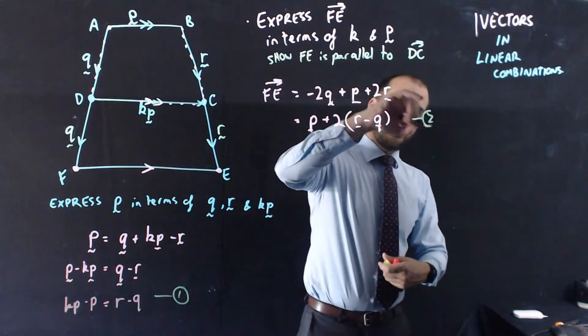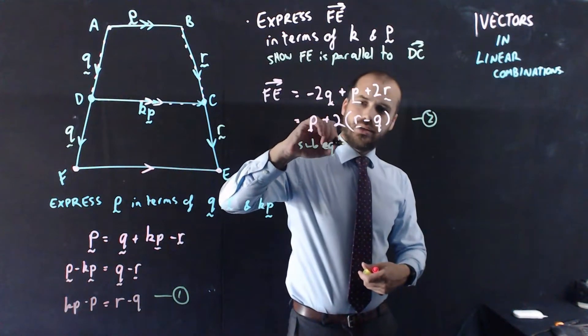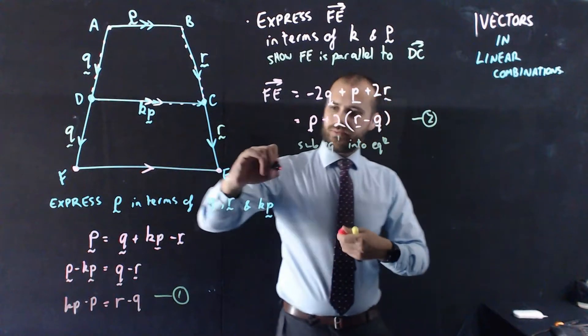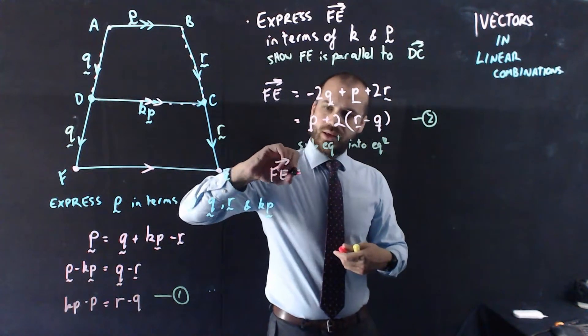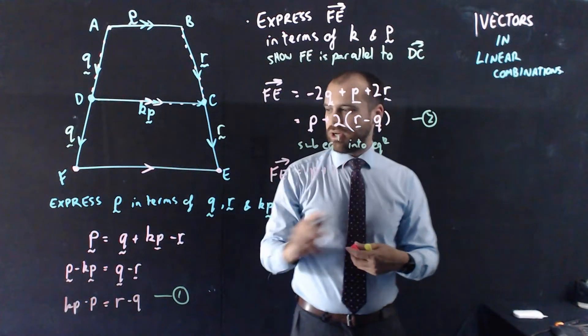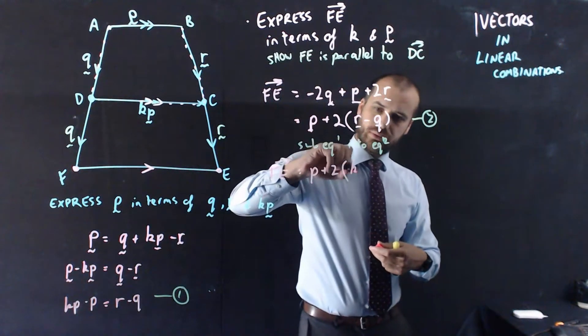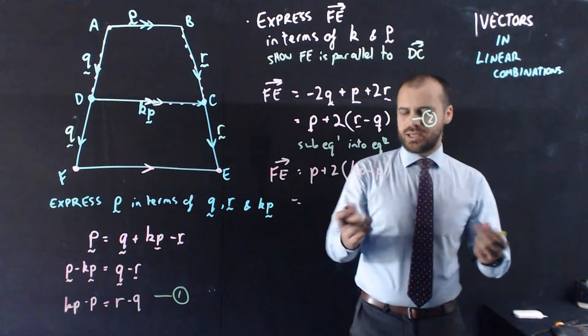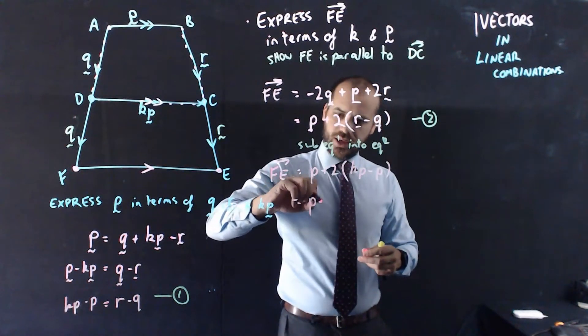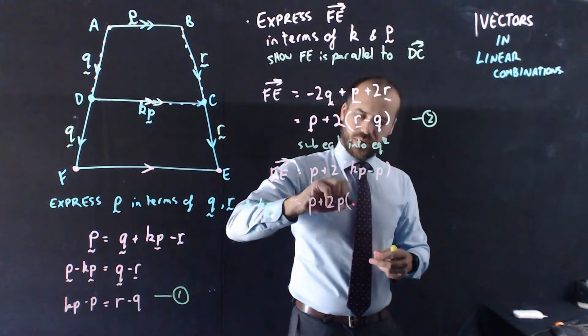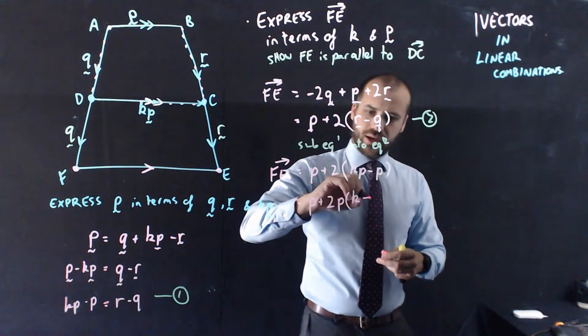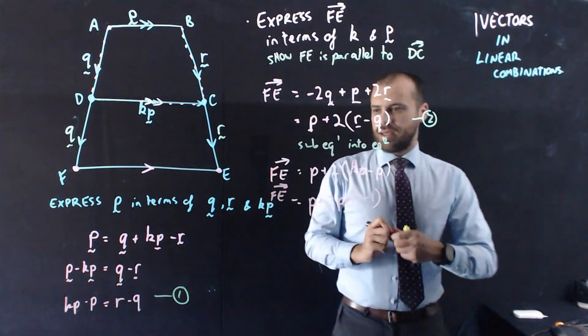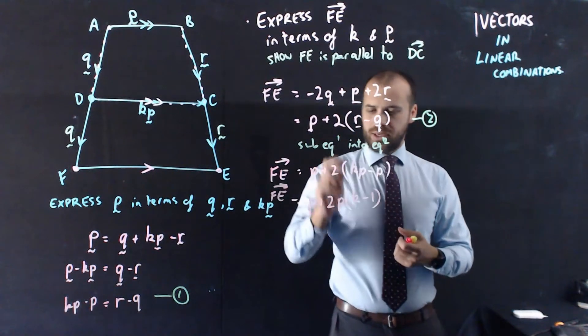I'll call this equation 2. I'll sub equation 1 into equation 2. And I'll get FE equals P plus 2 times KP minus P. Okay, I'm seeing this P here, so I can sort of pull the P out. P plus 2P bracket K minus 1. Alright, so FE equals the vector P plus 2PK minus 1.